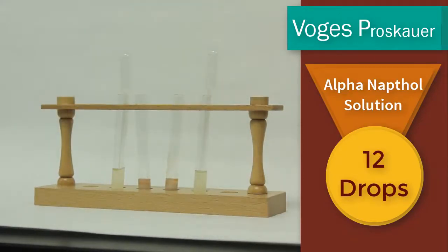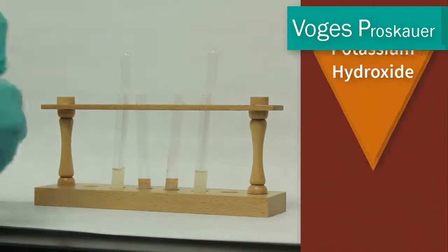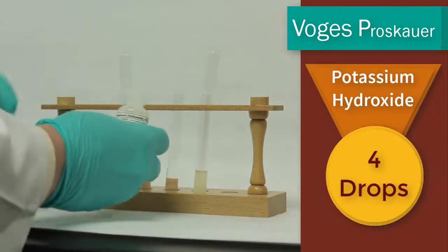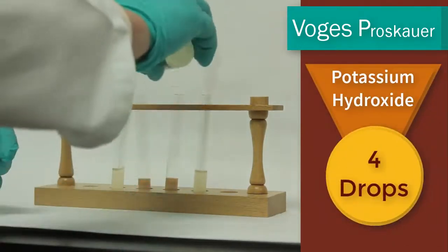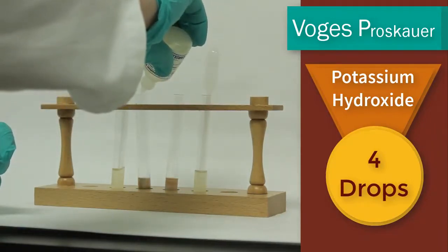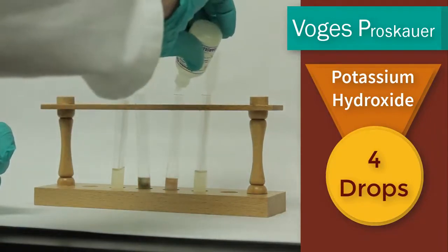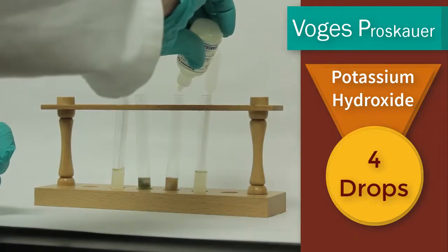Then you're going to add an additional 4 drops of the VP2 reagent which is 40% potassium hydroxide. And again that's 4 drops of potassium hydroxide.